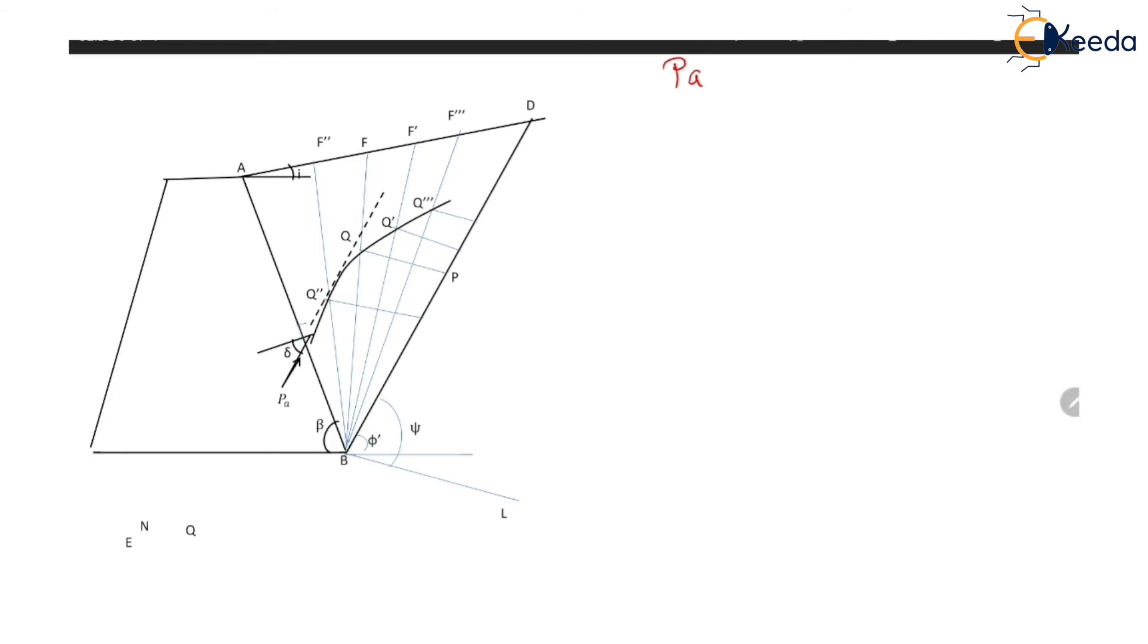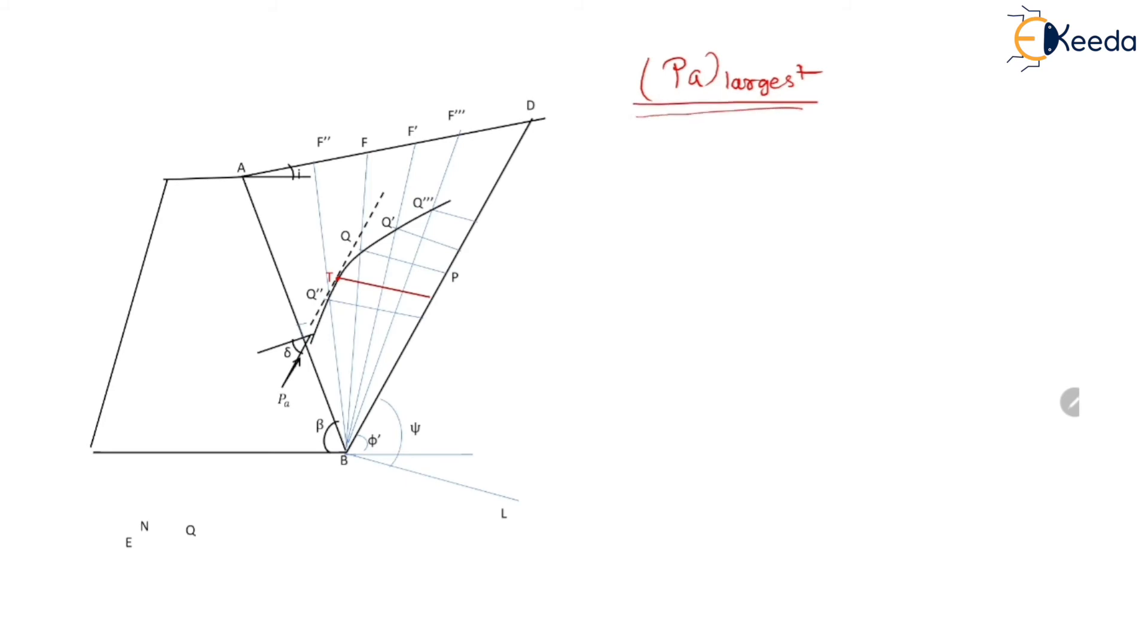So point T is the point of tangency where this tangent touches the curve. So this point T indicates the largest value of pa. So the magnitude of pa can be obtained by drawing a parallel line to BL from point T. So this parallel line which is shown by red color is parallel to BL and its length indicates the magnitude of largest value of pa.